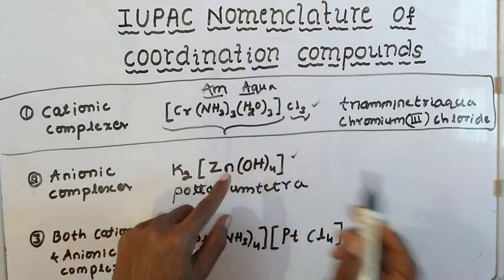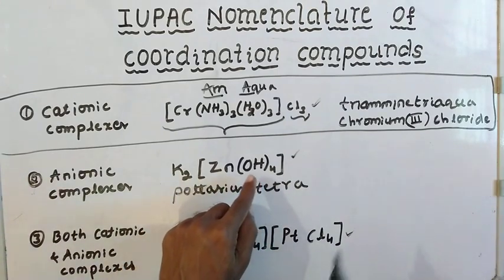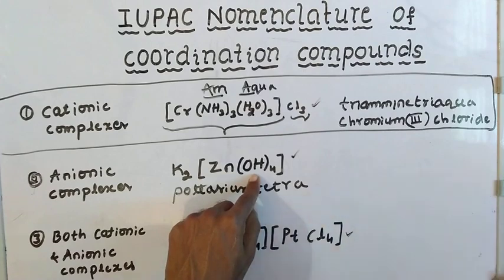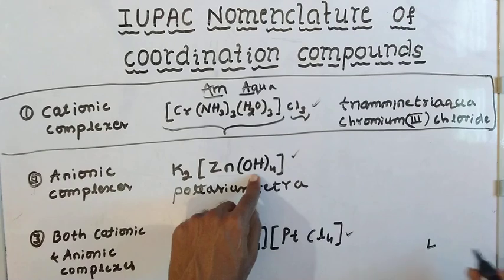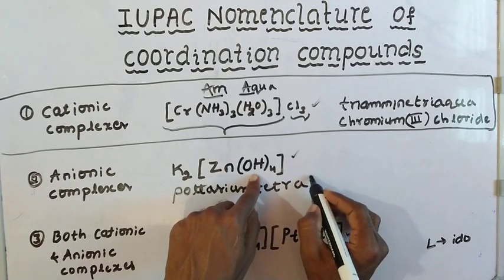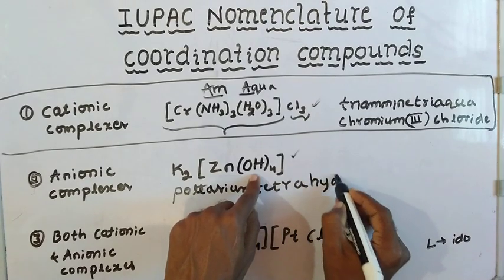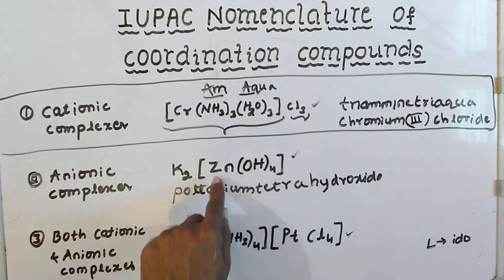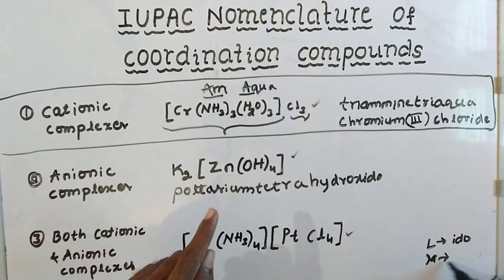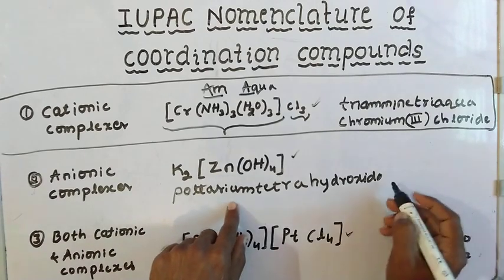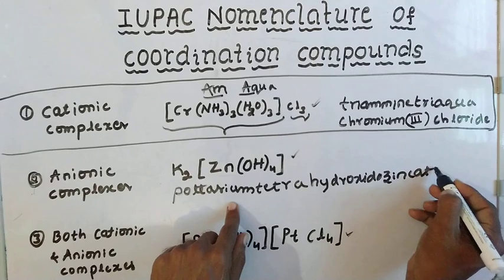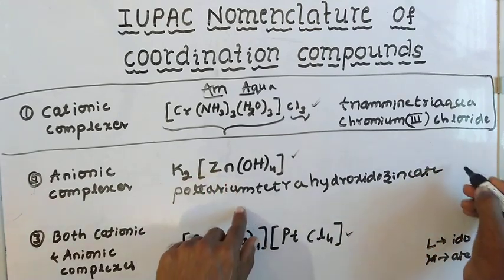This is an anionic complex, so the ligand name should end with -ido. The ligand is hydroxido. The metal name should end with -ate, giving us zincate. The oxidation state is +2.